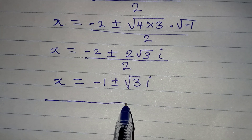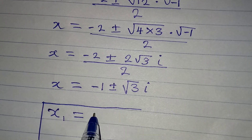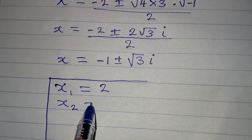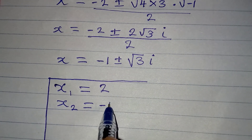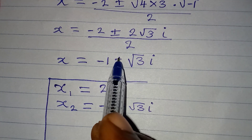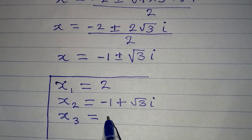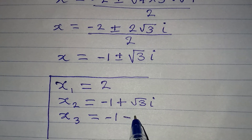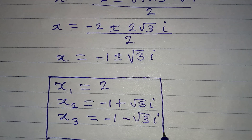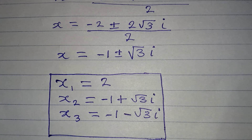Now let's bring the three solutions together. x₁ = 2, which is a real solution. x₂ = −1 + √3 i, picking the positive. And x₃ = −1 − √3 i, picking the negative. These are the three solutions to the equation, although only the first solution is a real solution.